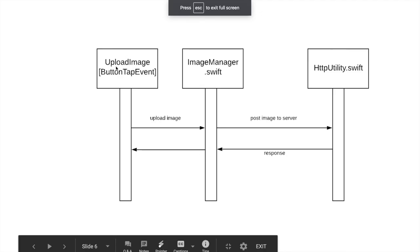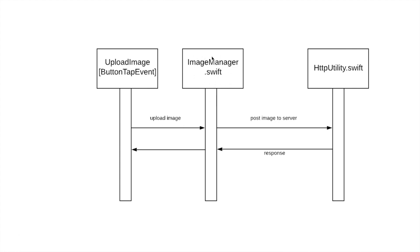Let me present the architecture. When I tap the upload image button, I have an image manager, and this image manager is going to post that image to the server with the help of the HTTP utility. This HTTP utility has already been created in the API series, so I will not write the code again — I will reuse that utility for this demo.